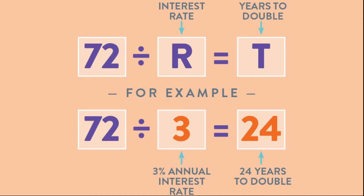The Rule of 72 can also be used to find the amount of time it takes for money's value to halve due to inflation. If inflation is 6% — it's around 2% right now, but if it were 6% — a given purchasing power of the money would be worth half in around 12 years: 72 divided by 6 equals 12.